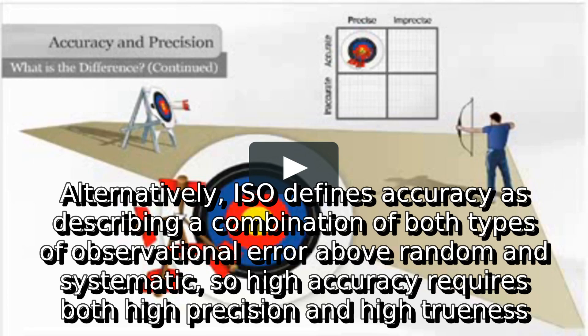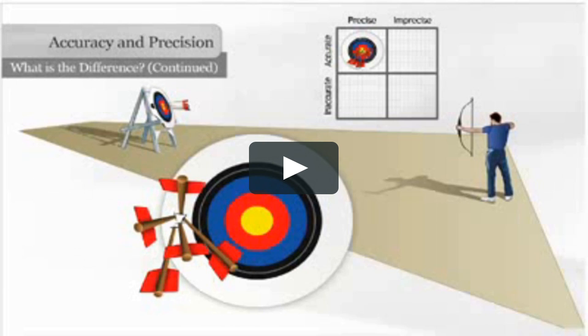Alternatively, ISO defines accuracy as describing a combination of both types of observational error: random and systematic. So high accuracy requires both high precision and high trueness.